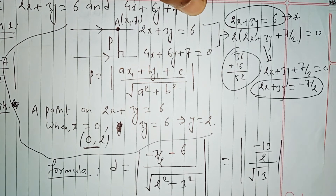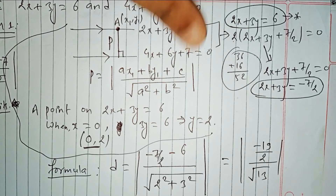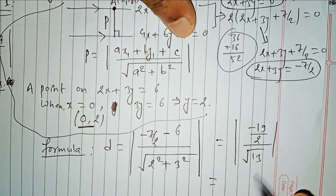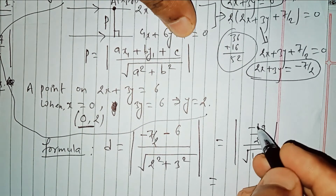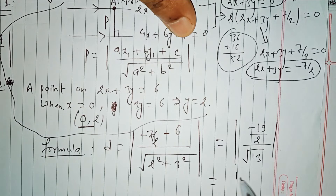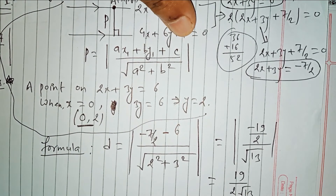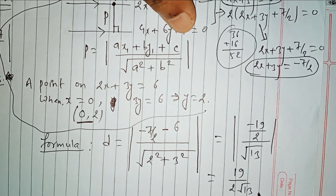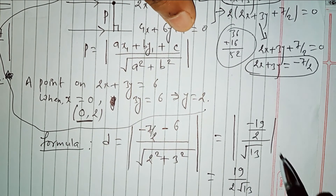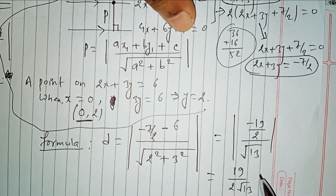Simplifying the result: 19 divided by 2 root 13. So the distance between the two parallel lines is 19 over 2 root 13.